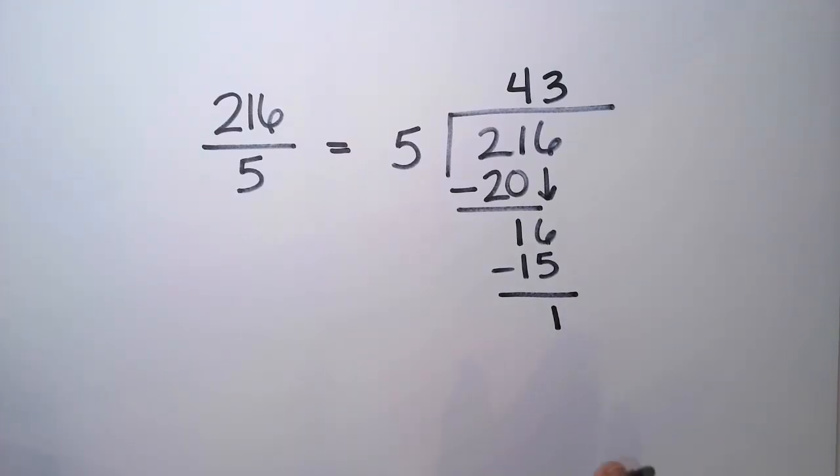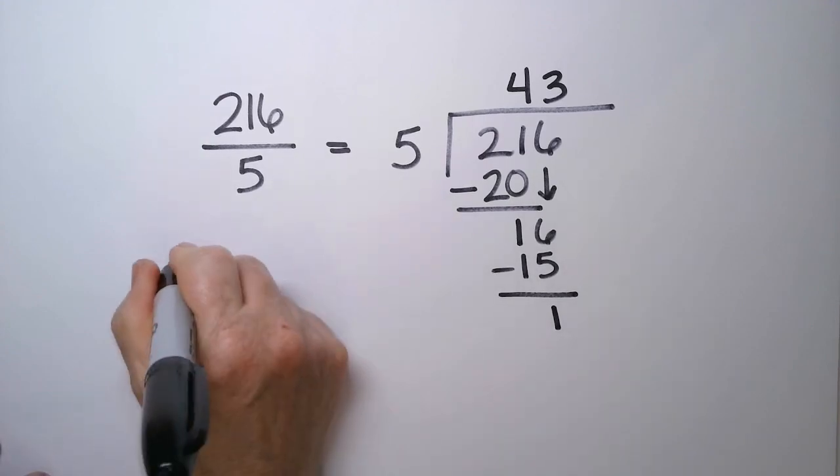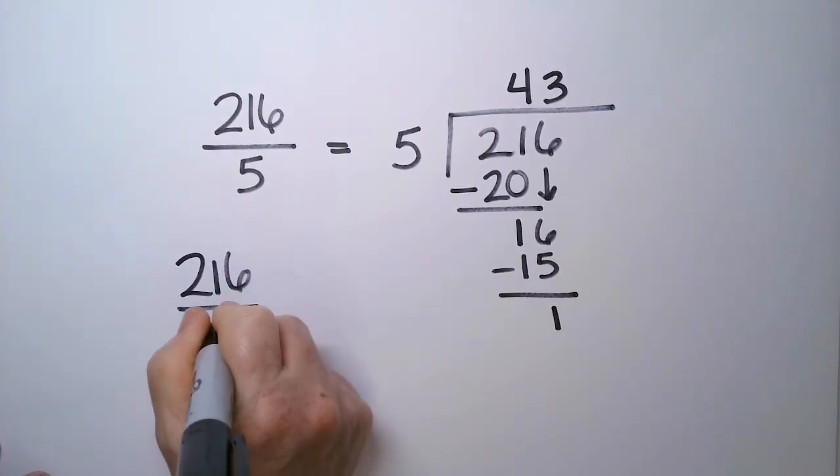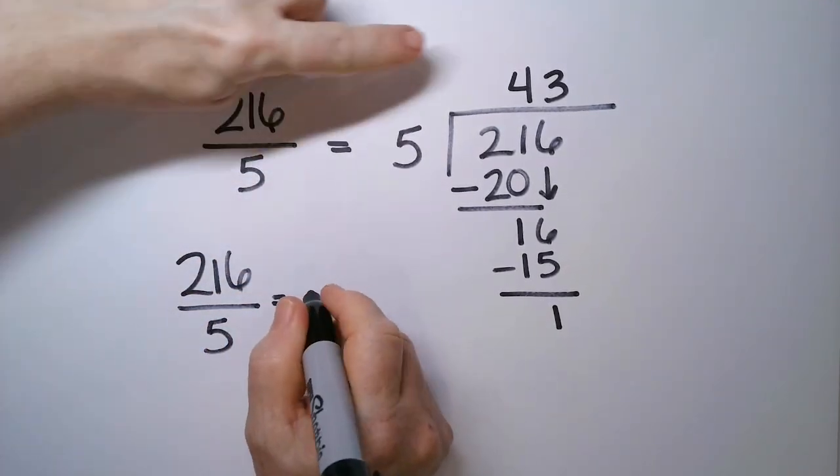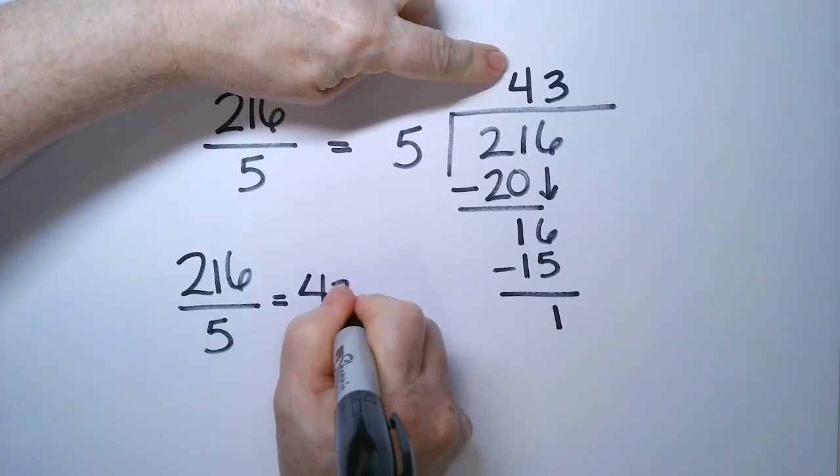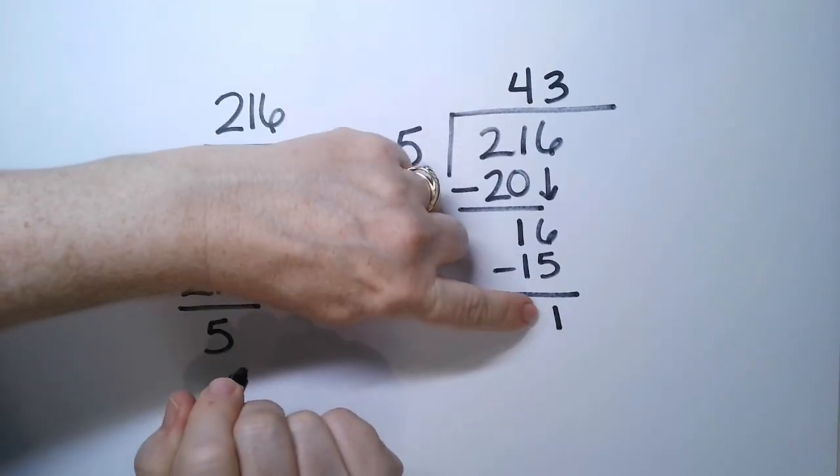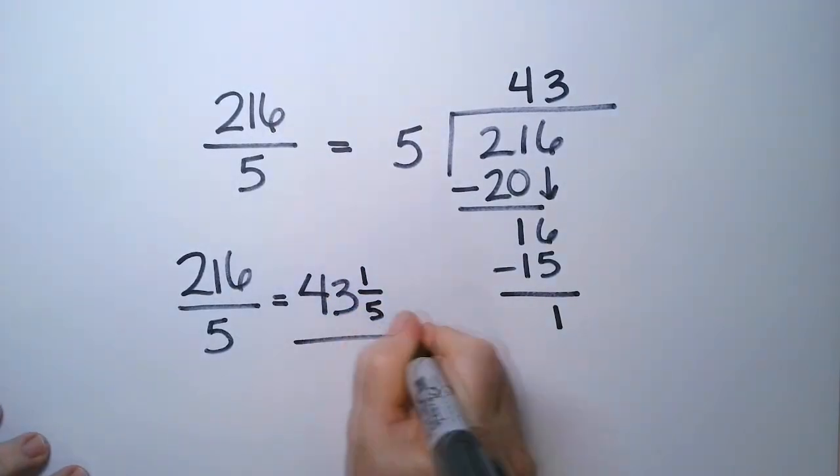No decimals, right, because we're in fraction land right now. So the answer to 216 over 5 is the whole number is 43, and a little leftover, 1 fifth. That's our leftover.